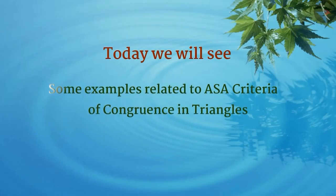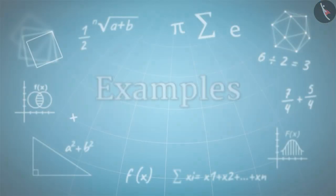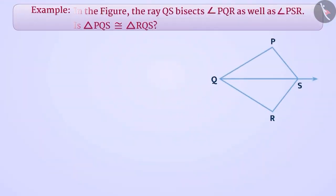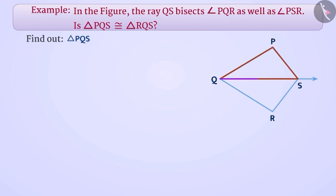Today we will see some examples related to the ASA criteria of congruence in triangles. In the given figure, the ray QS bisects angle PQR as well as angle PSR. We have to find out whether triangle PQS is congruent to triangle RQS or not.